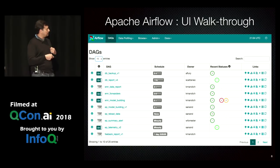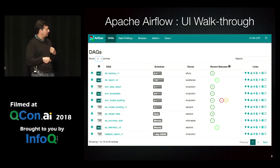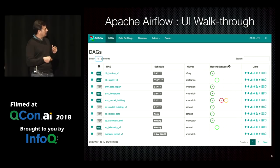The next column over is the schedule. It supports multiple types of schedules — cron scheduling, Python datetime semantics since this is written in Python, and built-in enums like hourly, daily, and monthly. The next column is the owner. This is a slightly older UI, but the trunk has a few more columns. This basically tells you that this DAG had three tasks and all of them completed successfully in the last run.